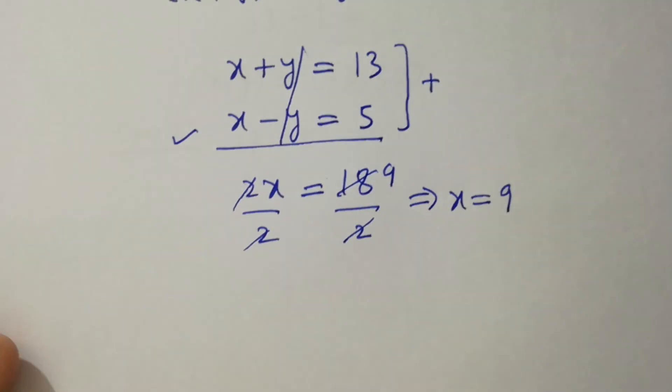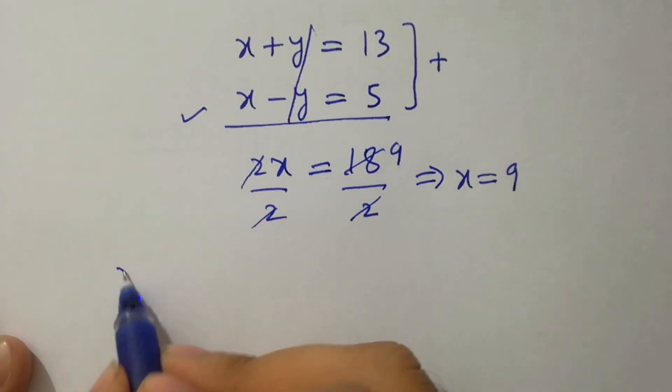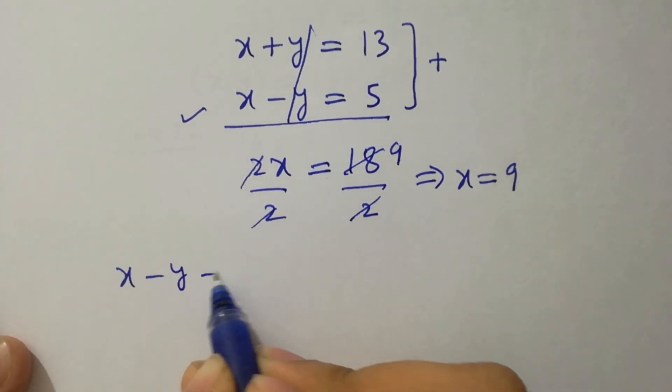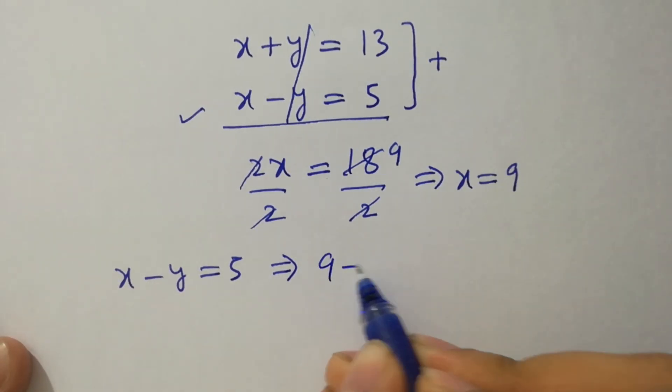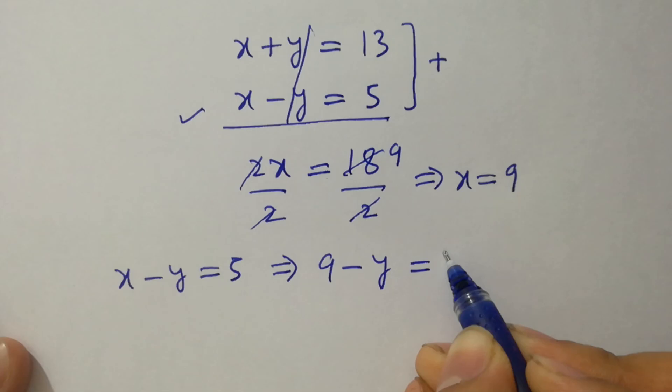To find y, take this equation, x minus y equal to 5. Put the value of x, 9 minus y equal to 5.